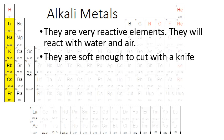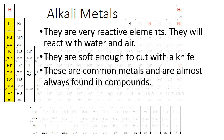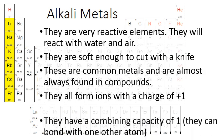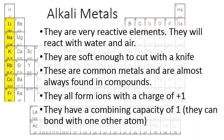These metals are soft enough to cut with a knife. So usually you think of metals as very hard, but these are kind of soft like some sort of metallic play-doh. They're very common metals and almost always found in compounds. And that's because they're so reactive that they will react with another element very quickly to become part of some larger compound. They all form ions with a charge of plus one. And they have a combining capacity of one, which of course means they can bond with one other atom at a time.